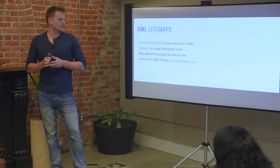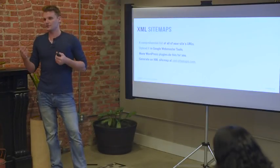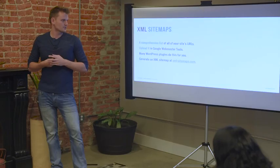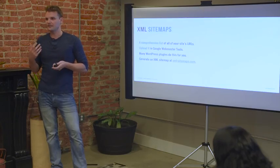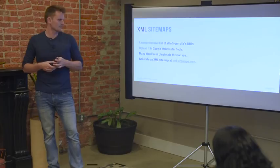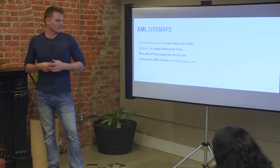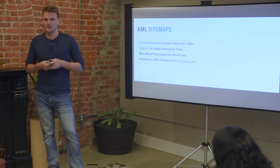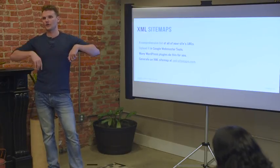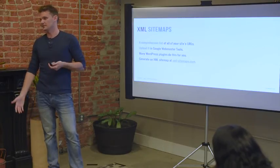XML sitemaps are just a comprehensive list of all of your URLs. You can upload it into Google Webmaster Tools, and many different WordPress plugins do this for you if you use WordPress. You can also generate a free one at xml-sitemaps.com. It's a comprehensive list of all of your pages.